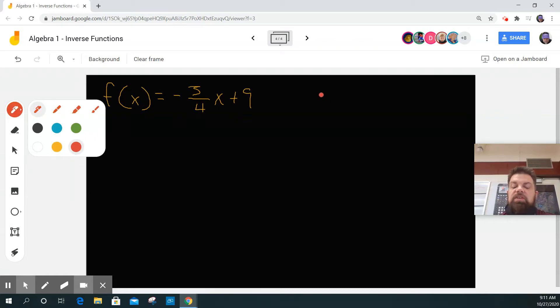So to find the inverse of this, the first thing I'm going to do is what? We're going to make y equal to f of x. So this becomes y equals negative three-fourths x plus 9. What's the next step?